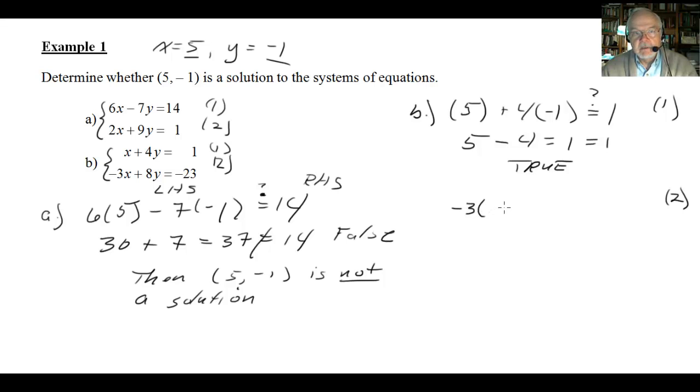Well, our second equation, a little more involved. Minus 3x plus 8 times y. Does that equal minus 23? When we plug it in, again, we'll plug in 5 for x and minus 1 for y.